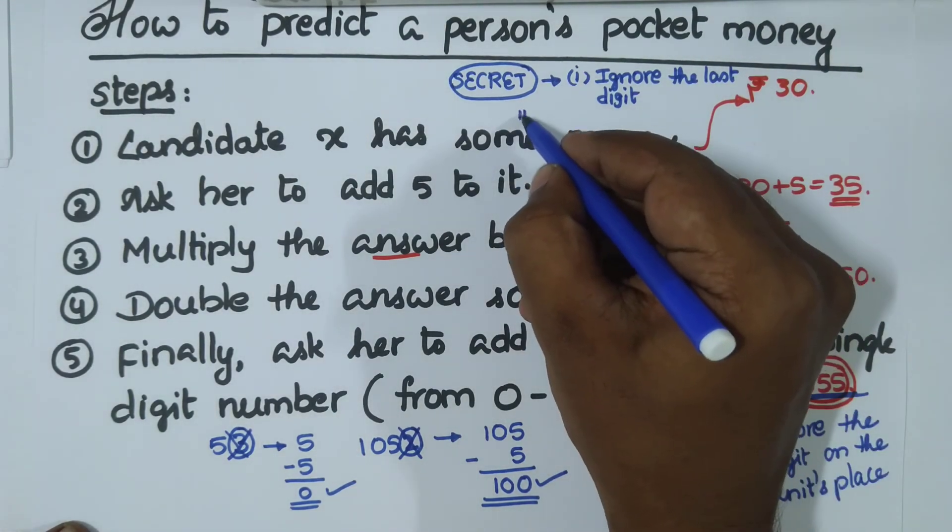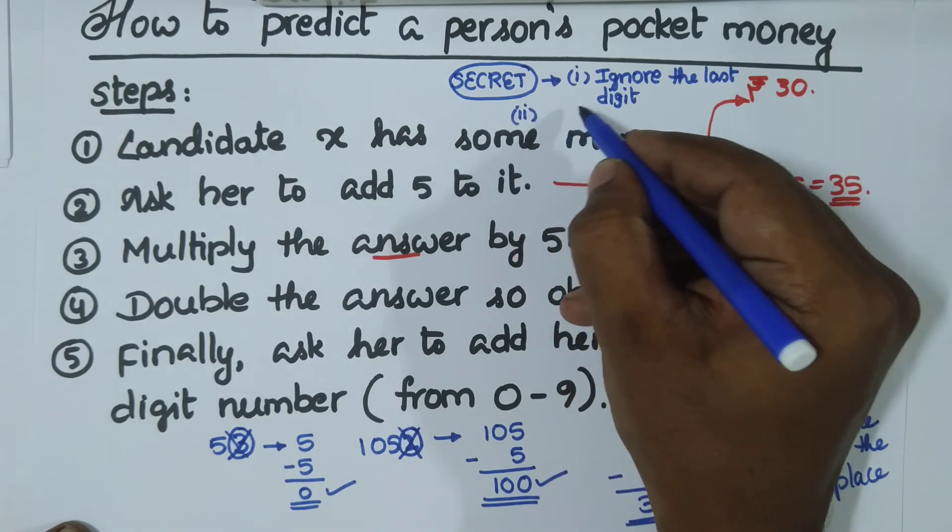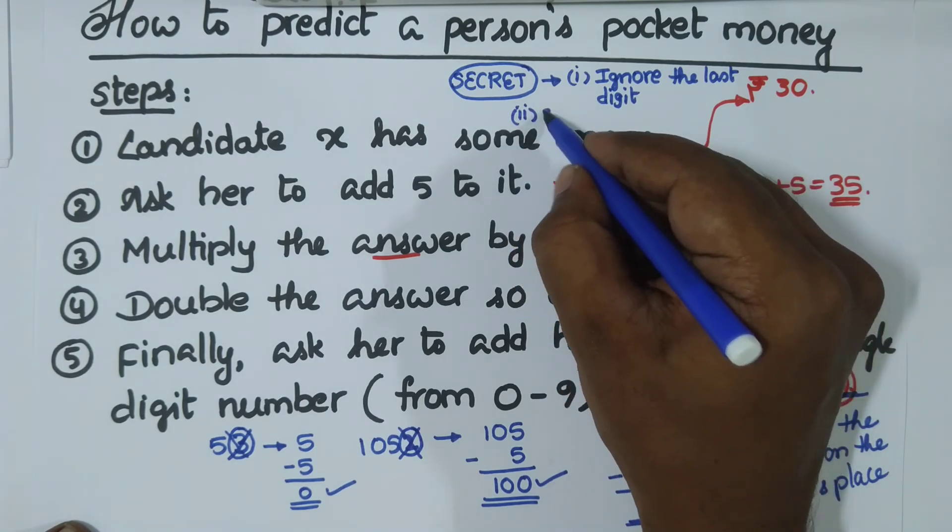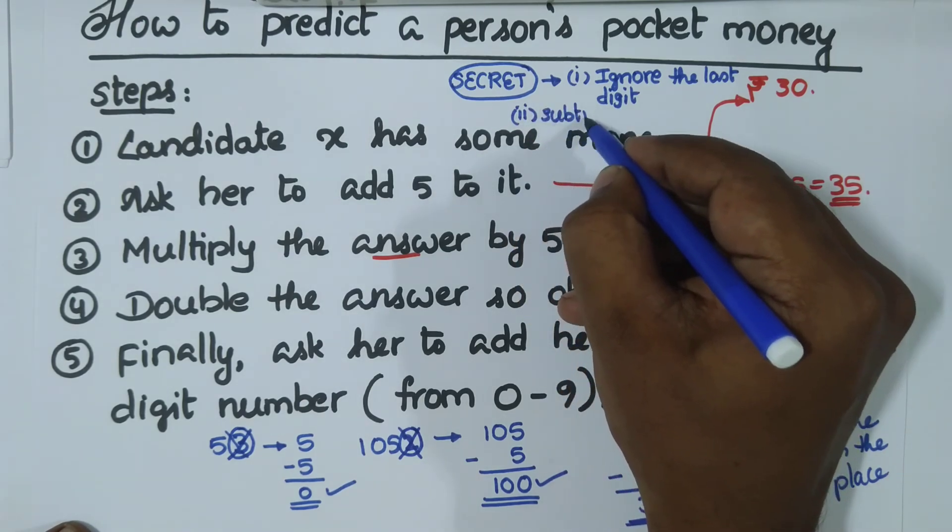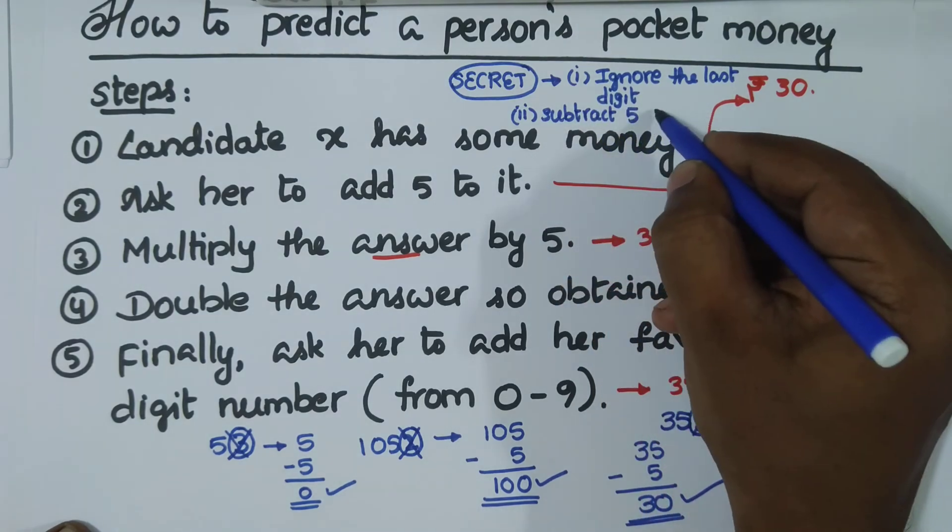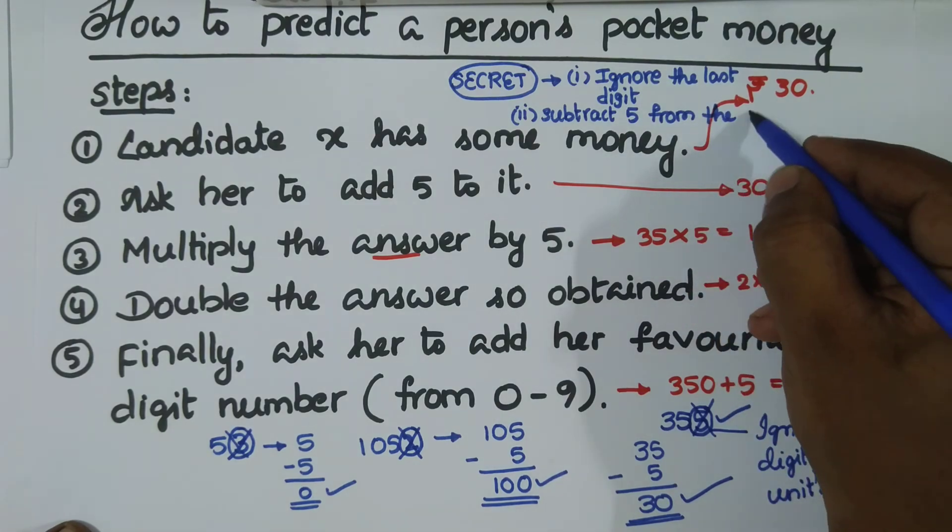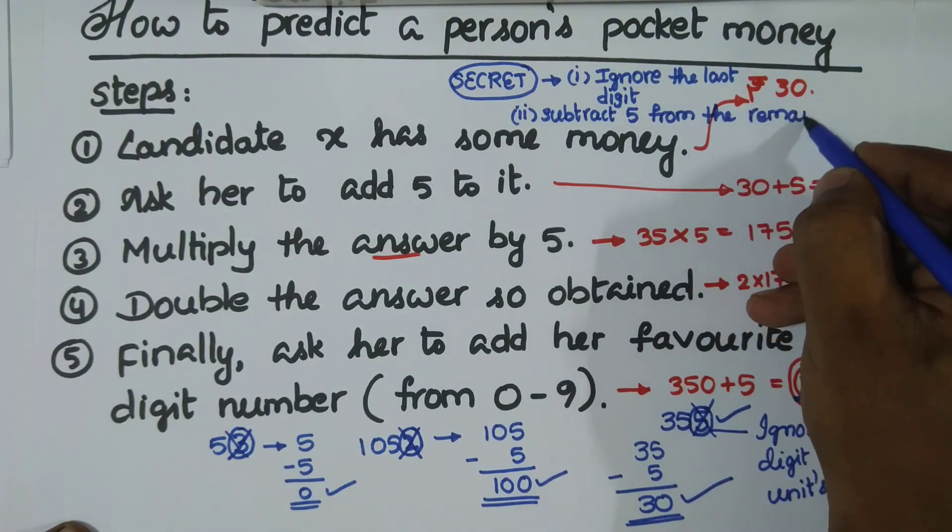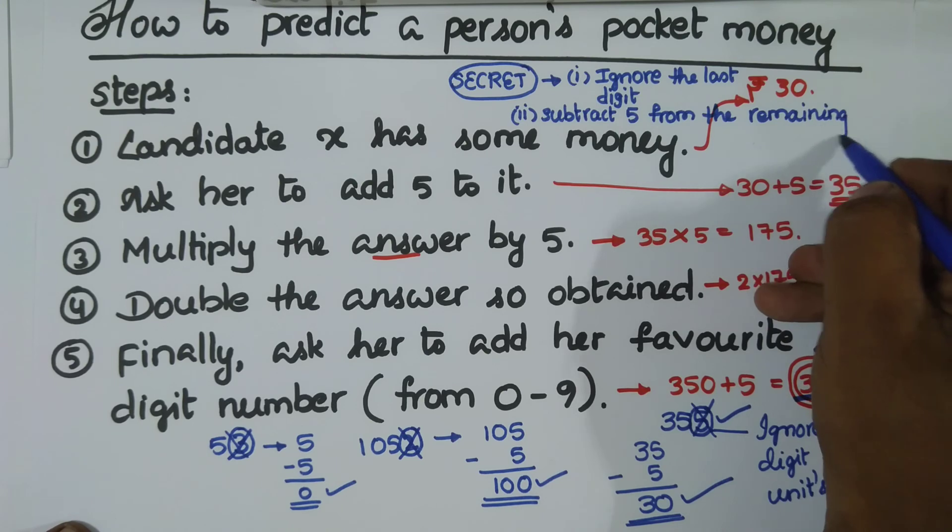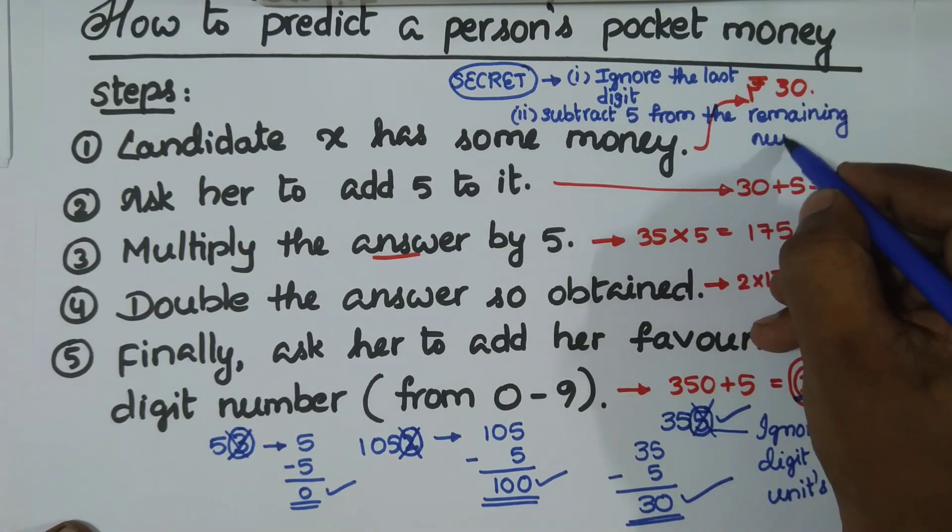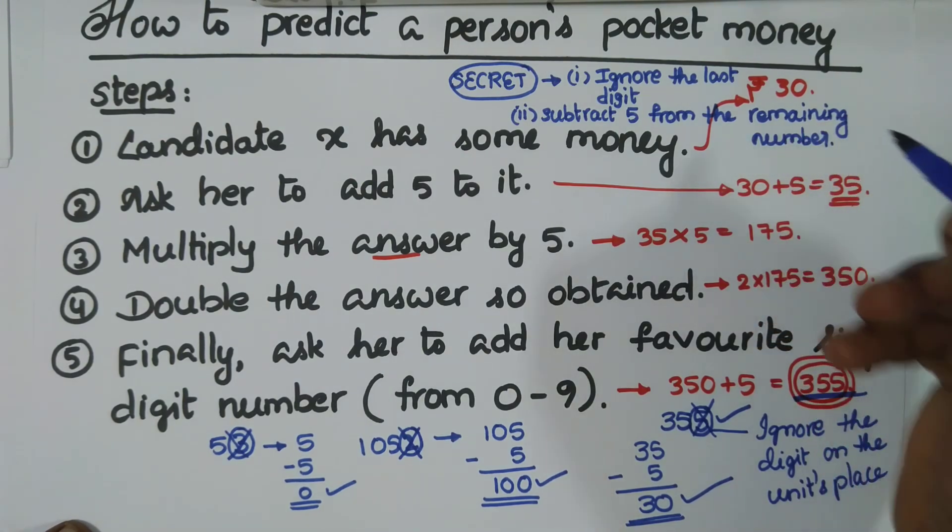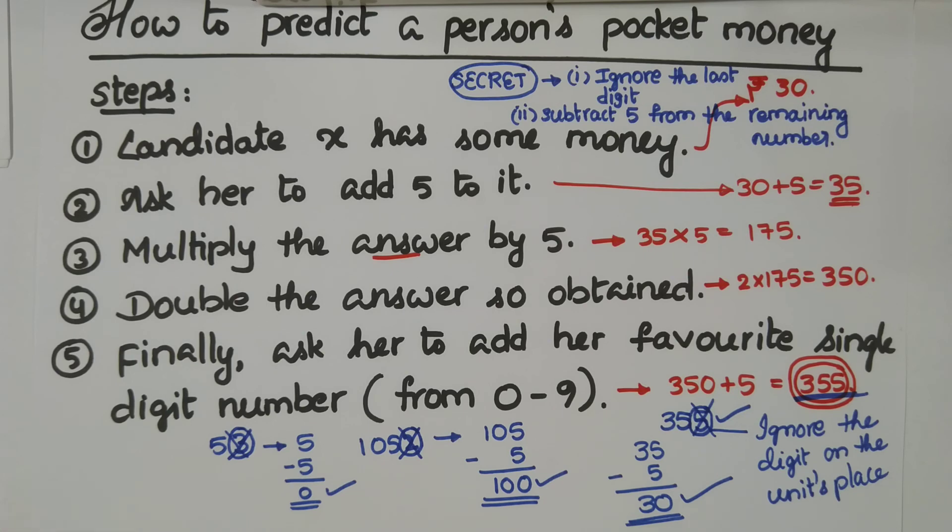And what is step two? Step two is from the remaining number, subtract five from the remaining number. That's it. Just two step secret. Two steps will tell you the correct money he or she has.